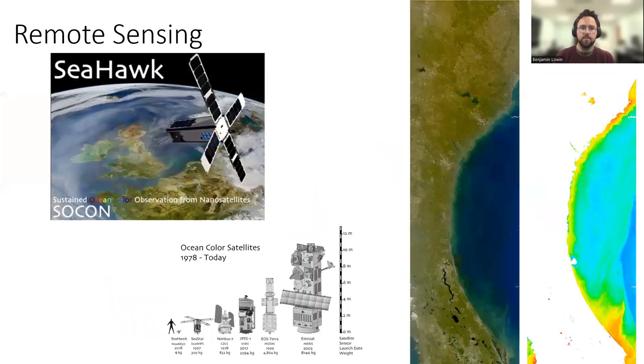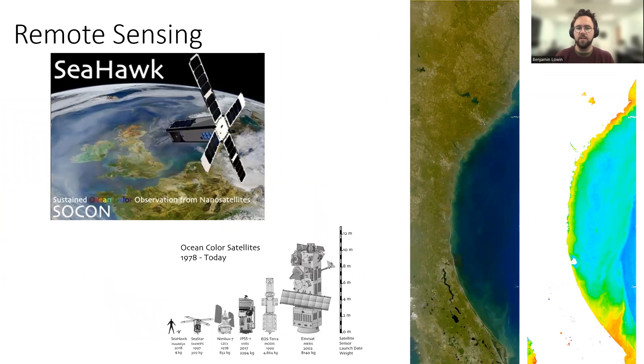The other research I work on is remote sensing using Seahawk. Seahawk is a cube satellite. It's about the size of a loaf of bread. If you look at the bottom of them here, you can see the size of other ocean color satellites. And if we compare it to EOS Terra MODIS, which is almost eight meters tall, Seahawk is less than 24 centimeters.